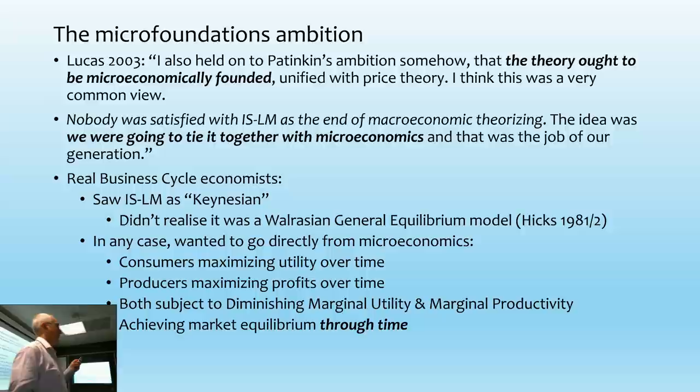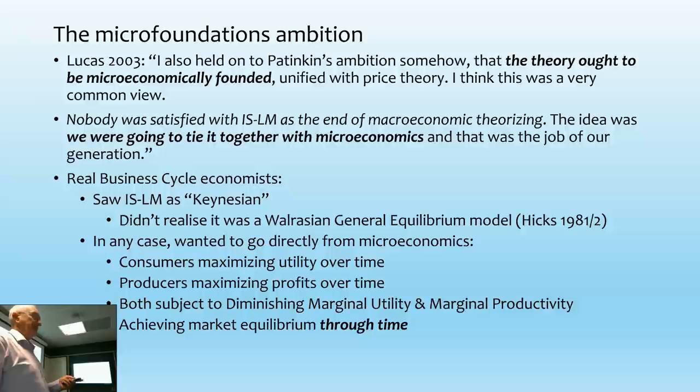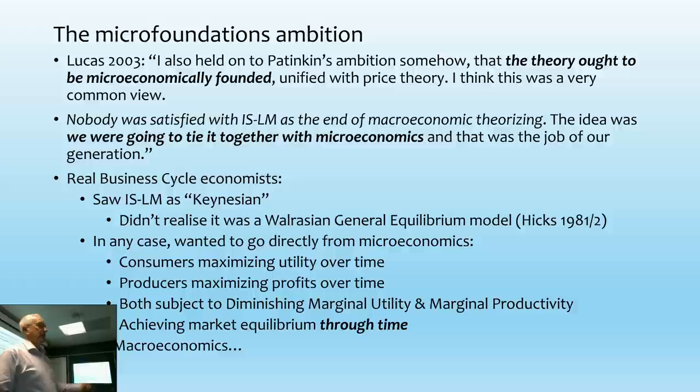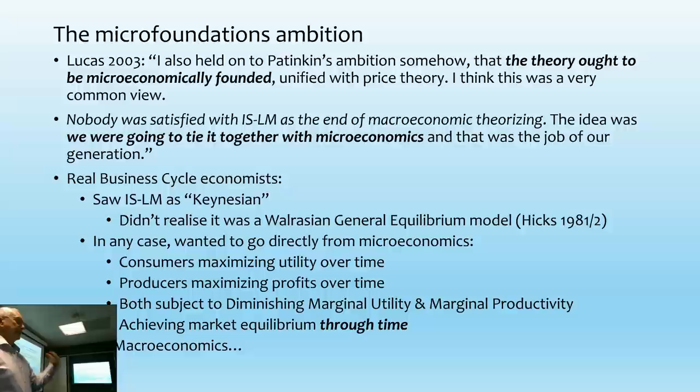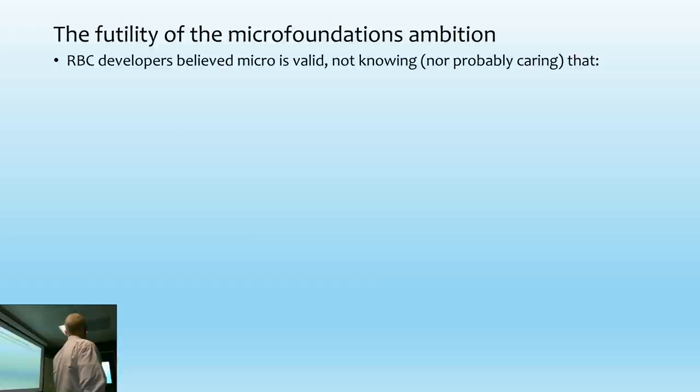They're trying to force the market to be in equilibrium through time at all times. The real business cycle people believe that's actually the case — they talk about the Great Depression being an equilibrium reaction by workers to reduce the number of hours worked. The DSGE people say that's too extreme; you've got to say there's some reason why the economy did not return to equilibrium rapidly. But they still basically have the idea that without these shocks and frictions, the economy would be in equilibrium.